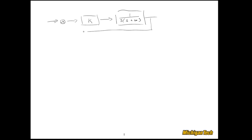We have a second-order plant with a pole at 0 and another pole at negative 6, and then a very simple compensator — just a proportional controller with a gain K. The closed-loop transfer function is K over s² + 6s + K.